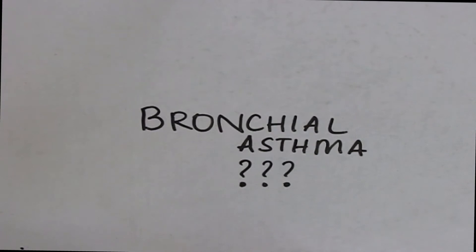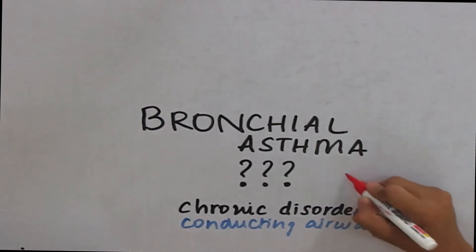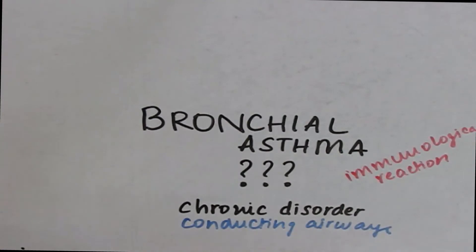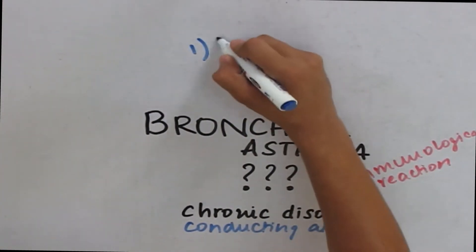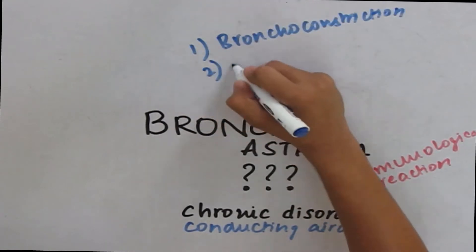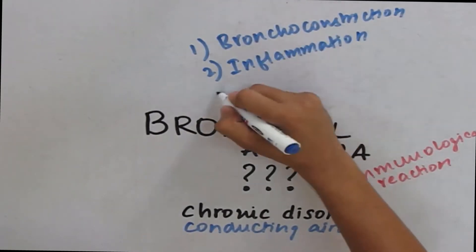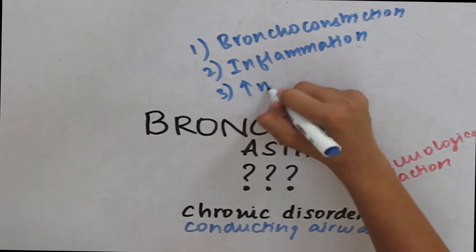Let us define bronchial asthma slowly. Bronchial asthma is a chronic disorder of the conducting airways which is caused by an immunological reaction. It is characterized by three features: episodes of bronchoconstriction, inflammation, and increased mucous secretion.